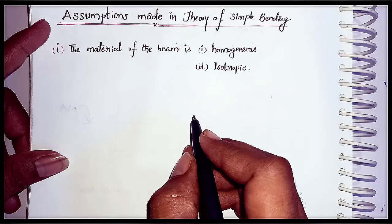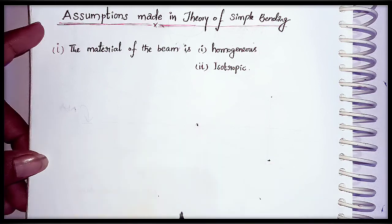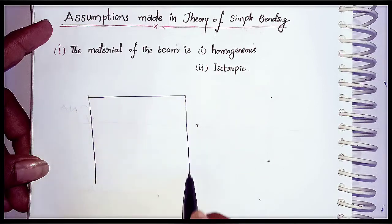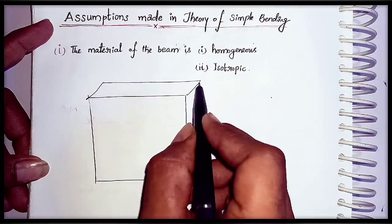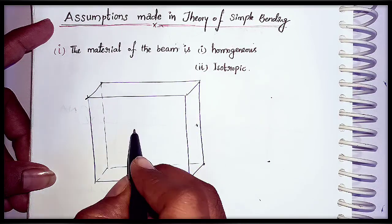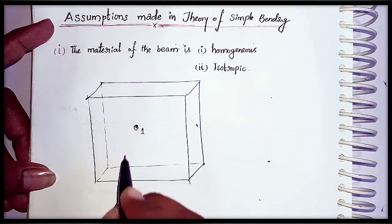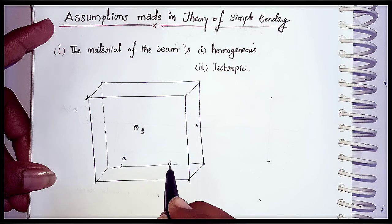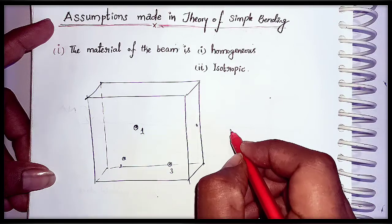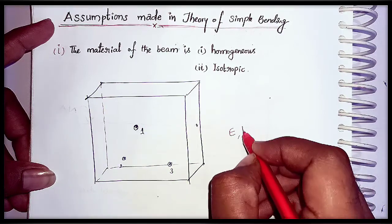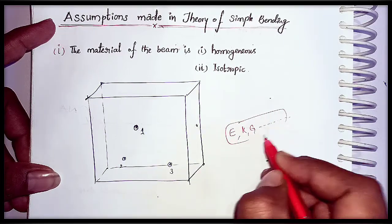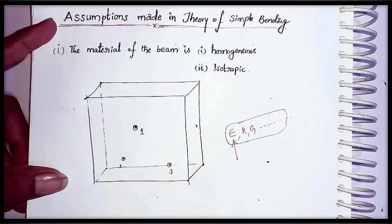To understand the physical meaning of homogeneous and isotropic, let us consider one cubical structure. In that cubical structure I am considering three points: point one, point two, and point three. Let us consider the material properties such as Young's modulus, bulk modulus, shear modulus, and other different properties. Among them I am just considering one property — that is Young's modulus.